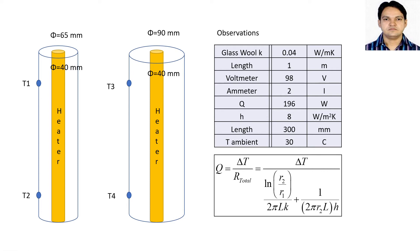After steady state condition is achieved, we will measure temperatures T1 and T2 and take their average — that will be the surface temperature of that cylinder. Ambient air temperature is taken as 30 degrees Celsius, so delta T is the difference between surface temperature and ambient air temperature, which we use in the heat loss equation by conduction. The second figure is the same setup, only the outer radius is increased — the heater diameter remains 40 mm but the outer radius is now 90 mm.